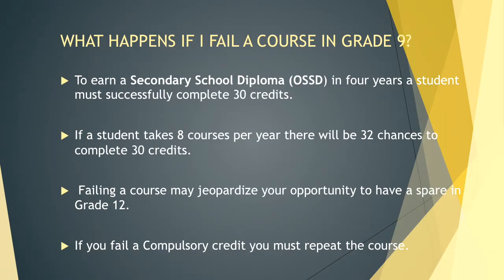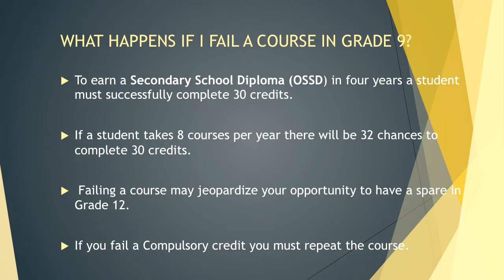What happens if I fail a course in grade 9? Please pay close attention. To earn a secondary school diploma in four years, a student must successfully complete 30 credits. If you take eight courses per year, there will be 32 chances to complete those 30 credits. So a lot of students will take a spare in grade 12, but if you fail a course, you may not have that opportunity. If you fail a compulsory credit — such as English, math, science, or geography — you must repeat the course.